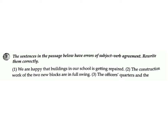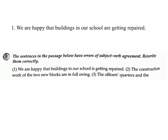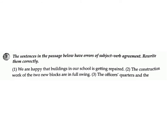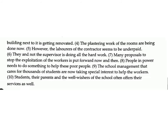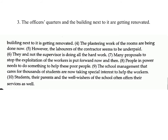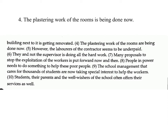Exercise F: The sentences in the passage below have errors of subject-verb agreement. Rewrite them correctly. 1. We are happy that buildings in our school is getting repaired. Answer: We are happy that buildings in our school are getting repaired. 2. The construction of the two new blocks are in full swing. Answer: The construction work of the two new blocks is in full swing. 3. The officers' quarters and the building next to it is getting renovated. Answer: The officers' quarters and the building next to it are getting renovated. 4. The plastering work of the rooms are being done now. Answer: The plastering work of the rooms is being done now.